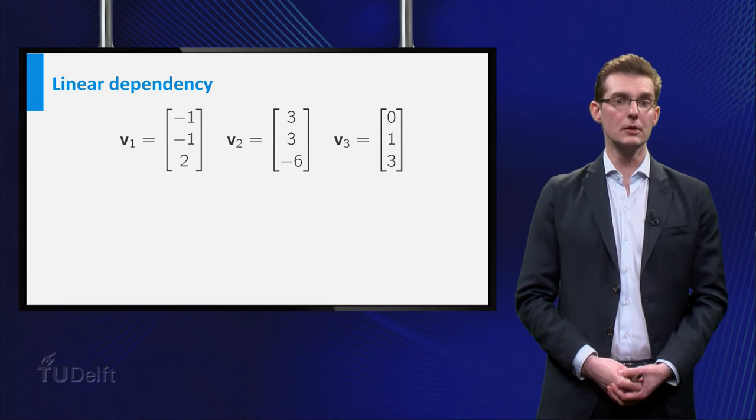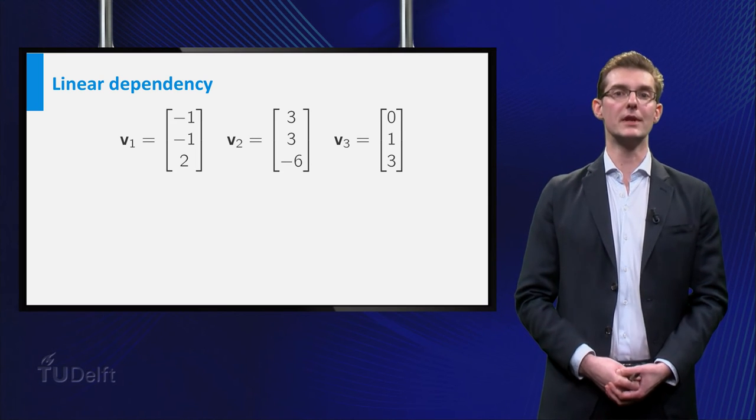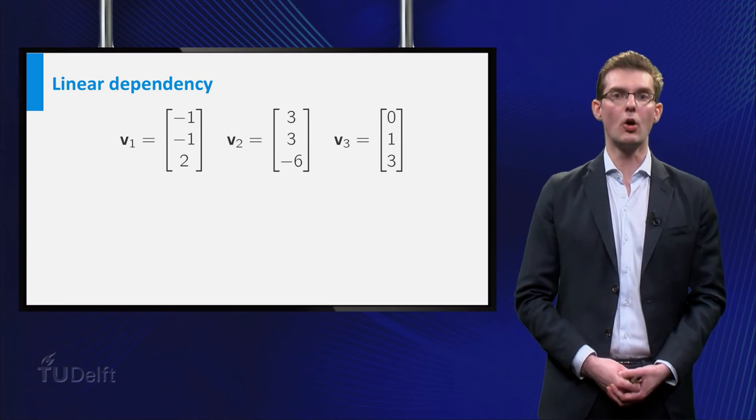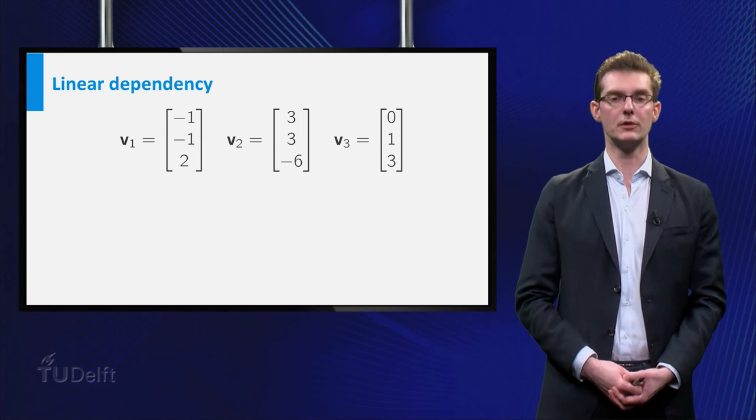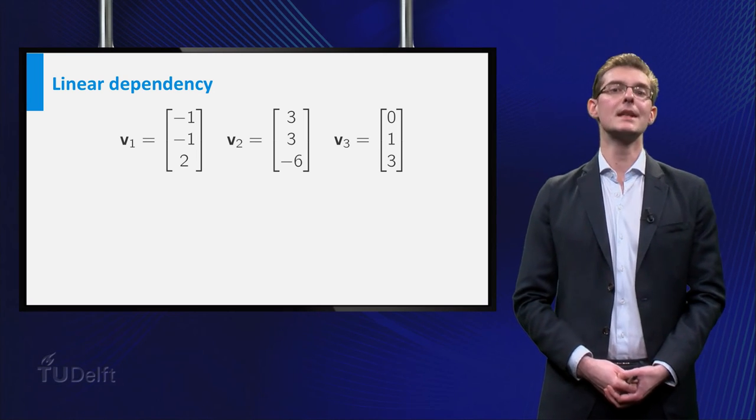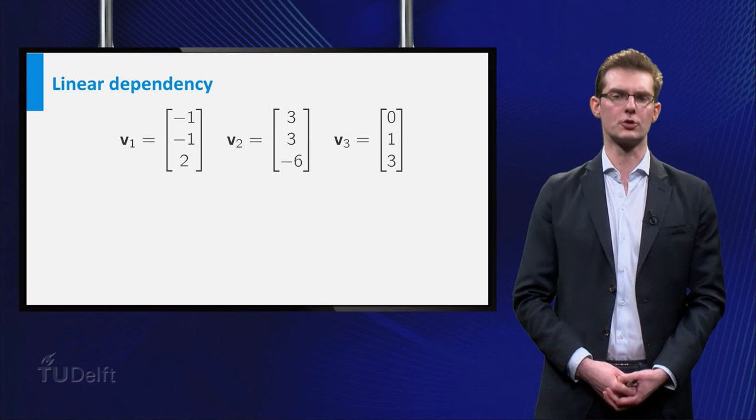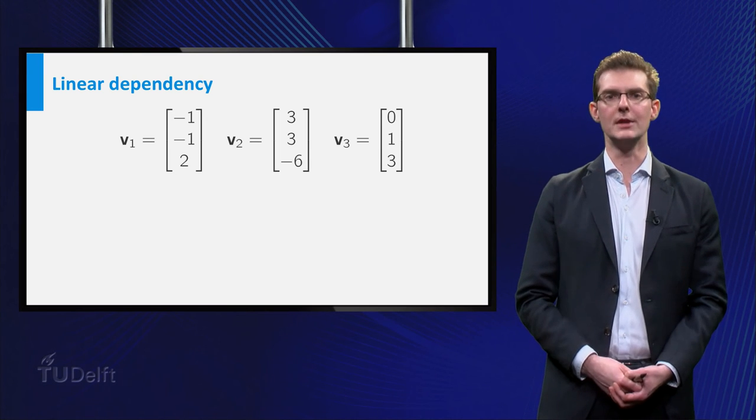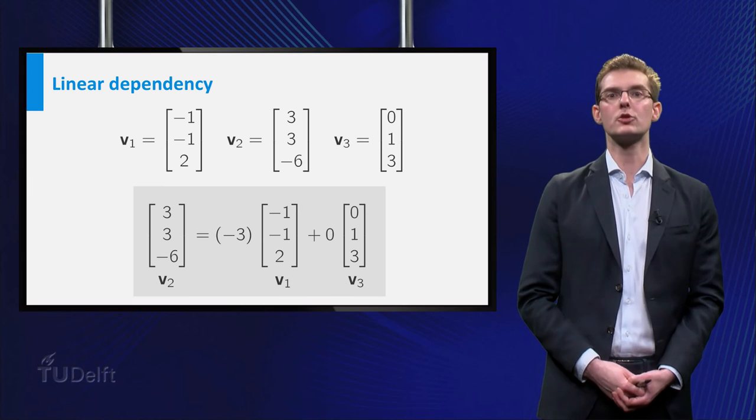Still, these vectors are linearly dependent. The definition of linear dependency only said that one of the vectors had to be a linear combination of the others. You can see that the second vector is a multiple of the first one, namely V2 equals minus 3 times V1.